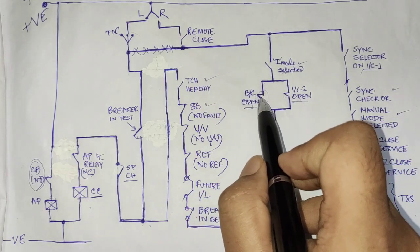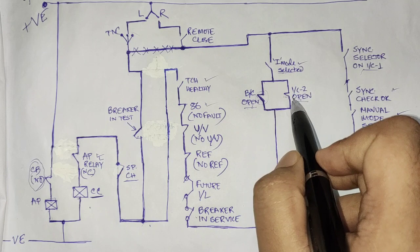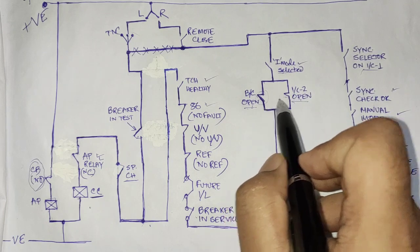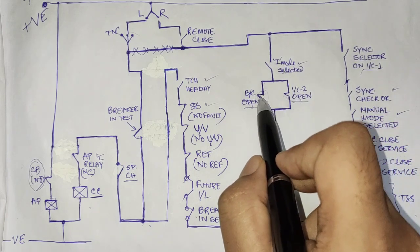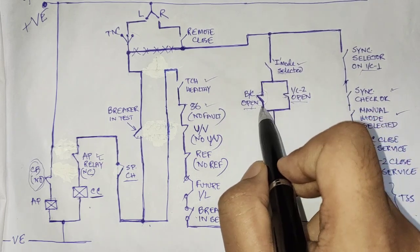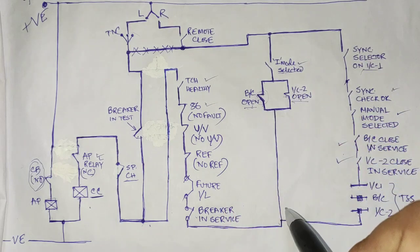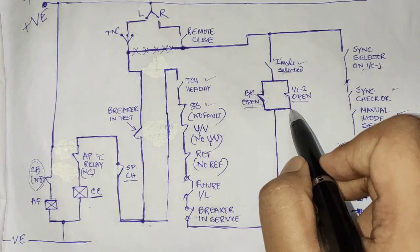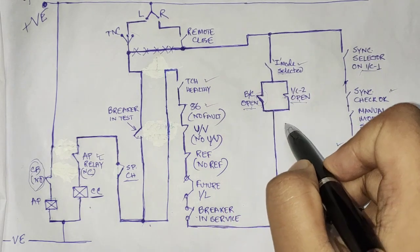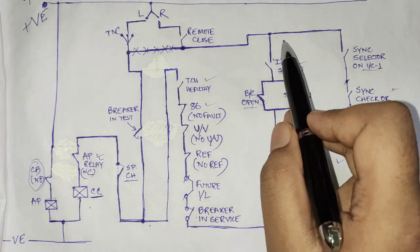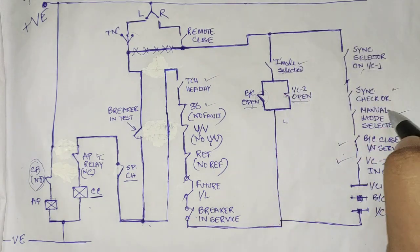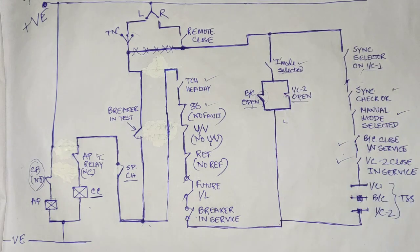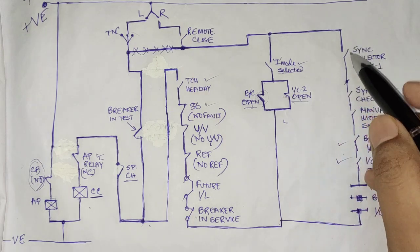If both the bus coupler and Incomer 2 are open, or any one of them is open, we can close Incomer 1. But if both are closed, we will not be able to close Incomer 1 under interlocked condition.